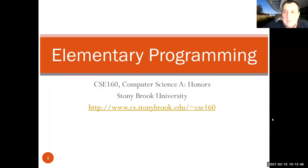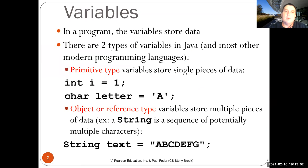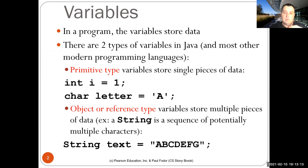We'll basically continue with elementary programming and start today with this chapter on simple programming in Java. The first thing I want to tell you about are variables. In a program, variables store data — they are basically an alias for a location in memory that may store data, and you can assign new data to that location or read the value from it. There are two types of variables in Java.